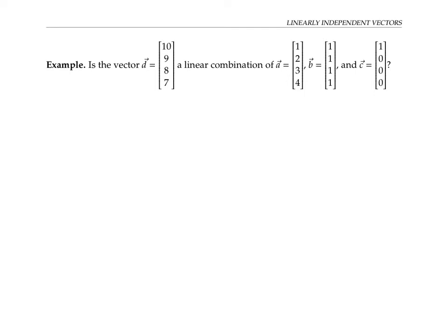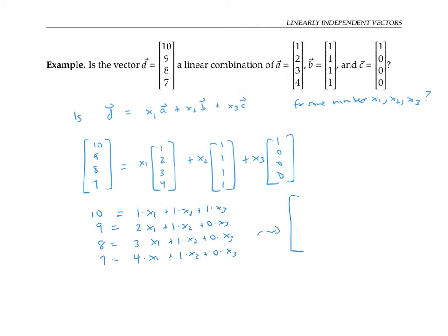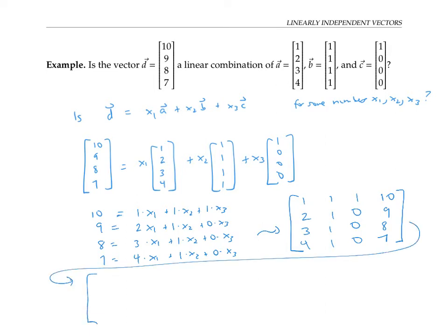So let's try to figure out if vector d is a linear combination of a, b, and c. In other words, can we write d as x1 times a plus x2 times b plus x3 times c? We can write this out as a system of linear equations. Recall that solving such a system can be done by row reducing the augmented matrix, where we augment by the constant terms. I'll omit the details of row reducing and just write down the final form, which tells us that we can indeed solve this system.